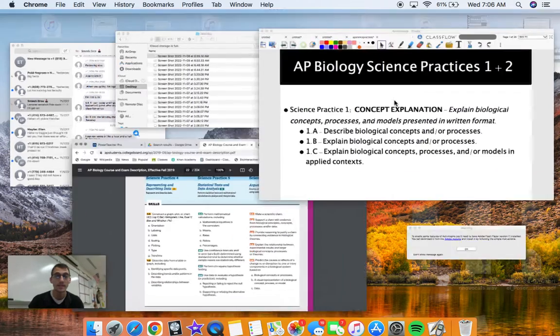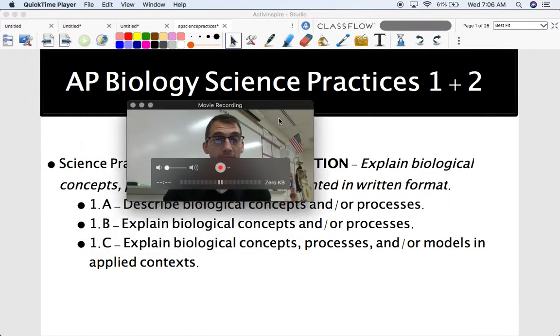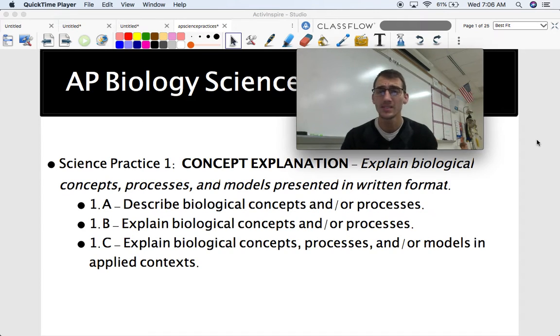So like I said, we're going to get started with AP Biology Science Practices one and two today. And these are probably the most simple, the most straightforward science practices. So science practice one, like I said, is concept explanation. And that is defined as explaining biological concepts, processes, and models presented in a written format.